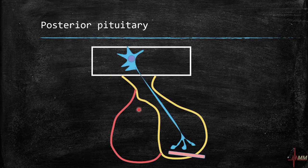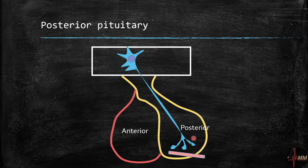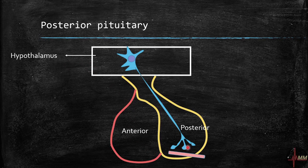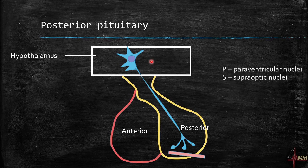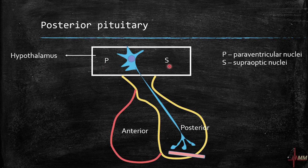Regarding the posterior pituitary: the hypothalamus is connected to the pituitary — the pituitary is suspended from the hypothalamus by the infundibulum. There are two important nuclei in the hypothalamus: the paraventricular nucleus and the supraoptic nucleus. These two nuclei are connected with the posterior pituitary.